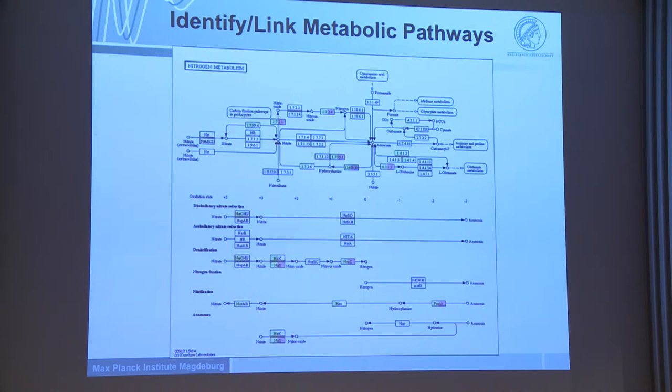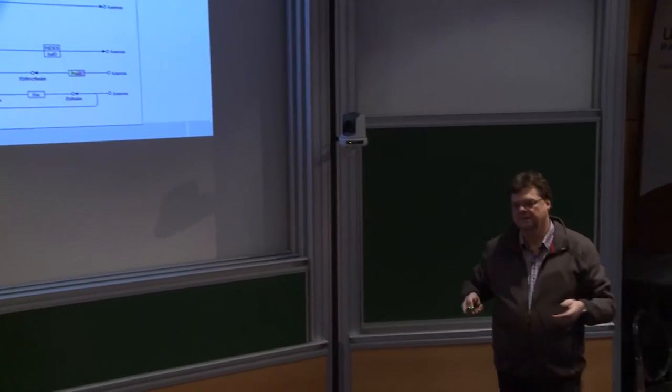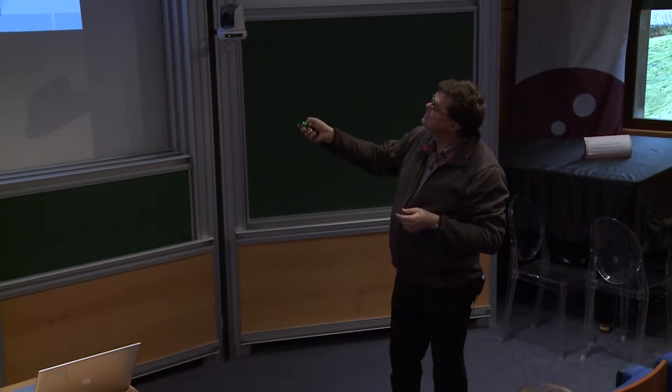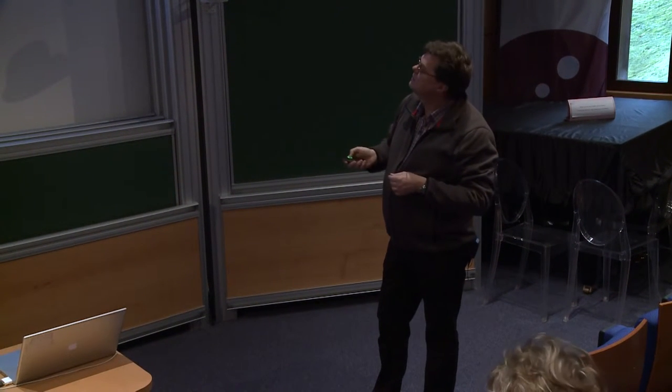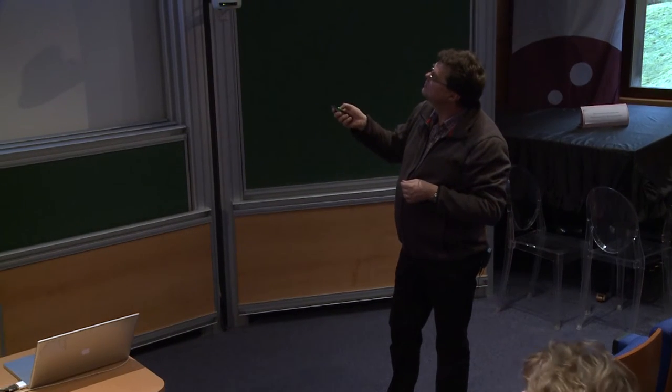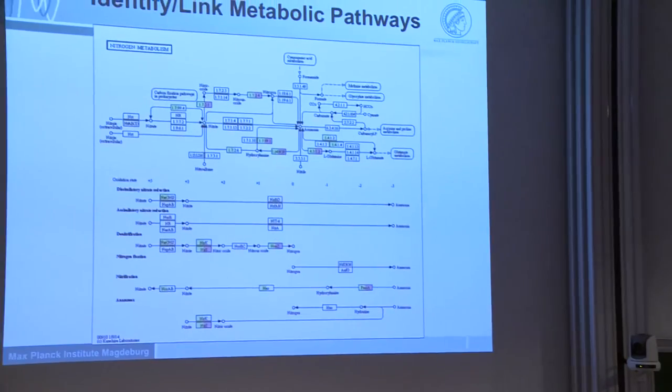So if they grow on ethanol, for instance, what are the pathways used in that community, and assign the organisms to them, and then identify organisms which are key players here. And you can see, in part, this works, this is published data, so we can do this already, but we need a little bit more information to cover the whole pathway structure in a biogas plant.